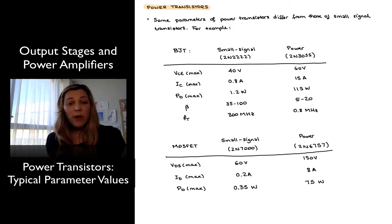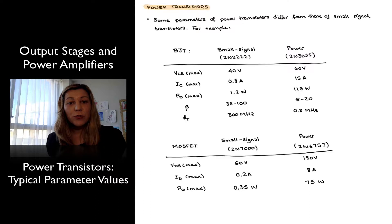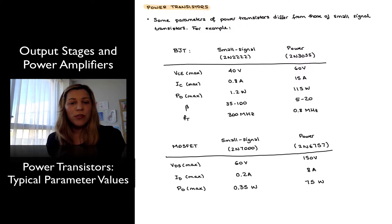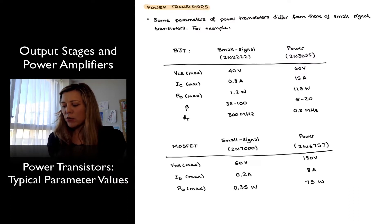We're talking about the use of power transistors in the design of power output stages or power amplifiers. As a quick final note, I wanted to point out that if we look at the datasheet for a power transistor versus a small signal transistor, we're going to find different values for some key parameters and characteristics. I've added this table here to try to illustrate some of those differences.